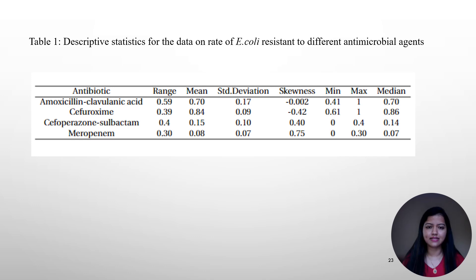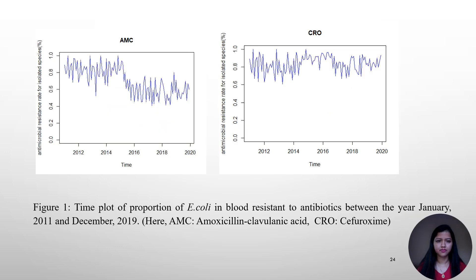This is the descriptive statistics of the data. For the first two antibiotics, the resistance rate includes 1, whereas for the remaining two antibiotics the resistance rate includes 0s. The time plot for amoxicillin-clavulanic acid and cefuroxime shows a change point in the year 2015, corresponding to a change from manual to automated testing method. This has been considered as a regressor variable in the model as a dummy variable: 1 before and 0 after changing the testing method.